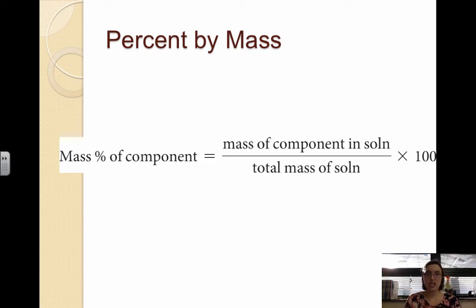For example, if it was 36% HCl by mass, that means you have 36 grams of HCl in 100 grams of solution. You can do the same thing if you want percent by volume - instead of mass, it would just be volume.